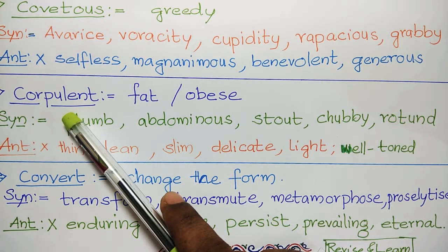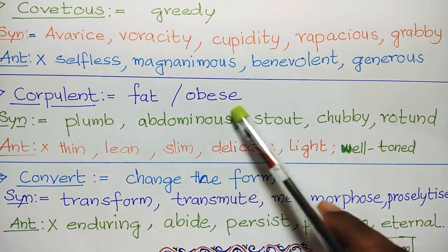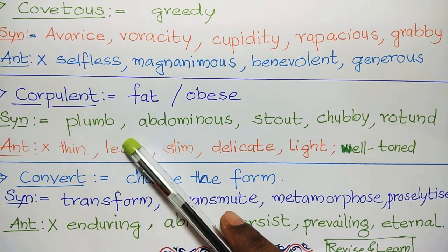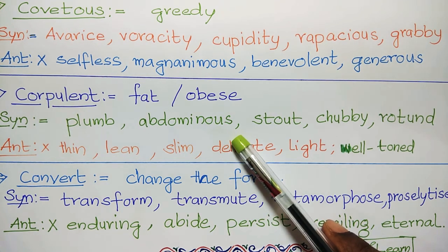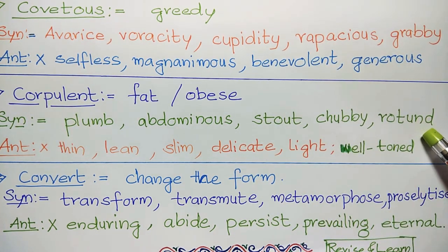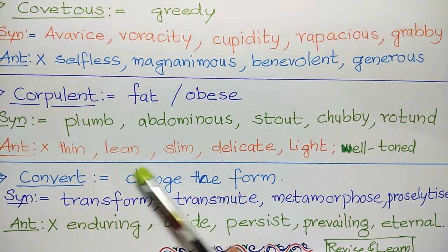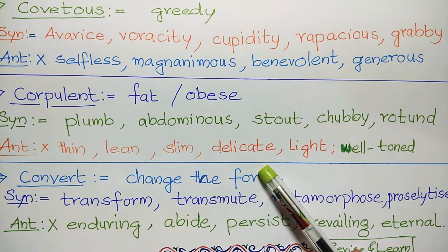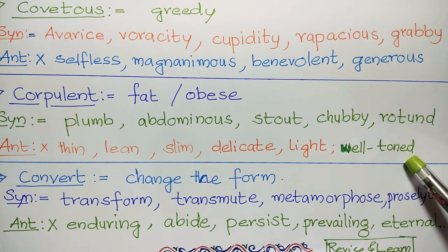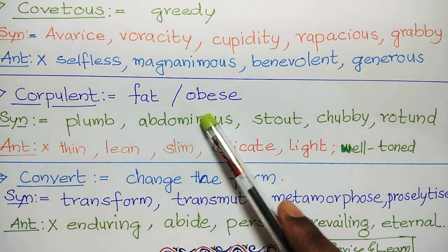Next one, corpulent. Corpulent means fat or obese. Synonyms are plump, abdominous, stout, chubby, rotund. Antonyms: thin, lean, slim, delicate, light, well-toned.